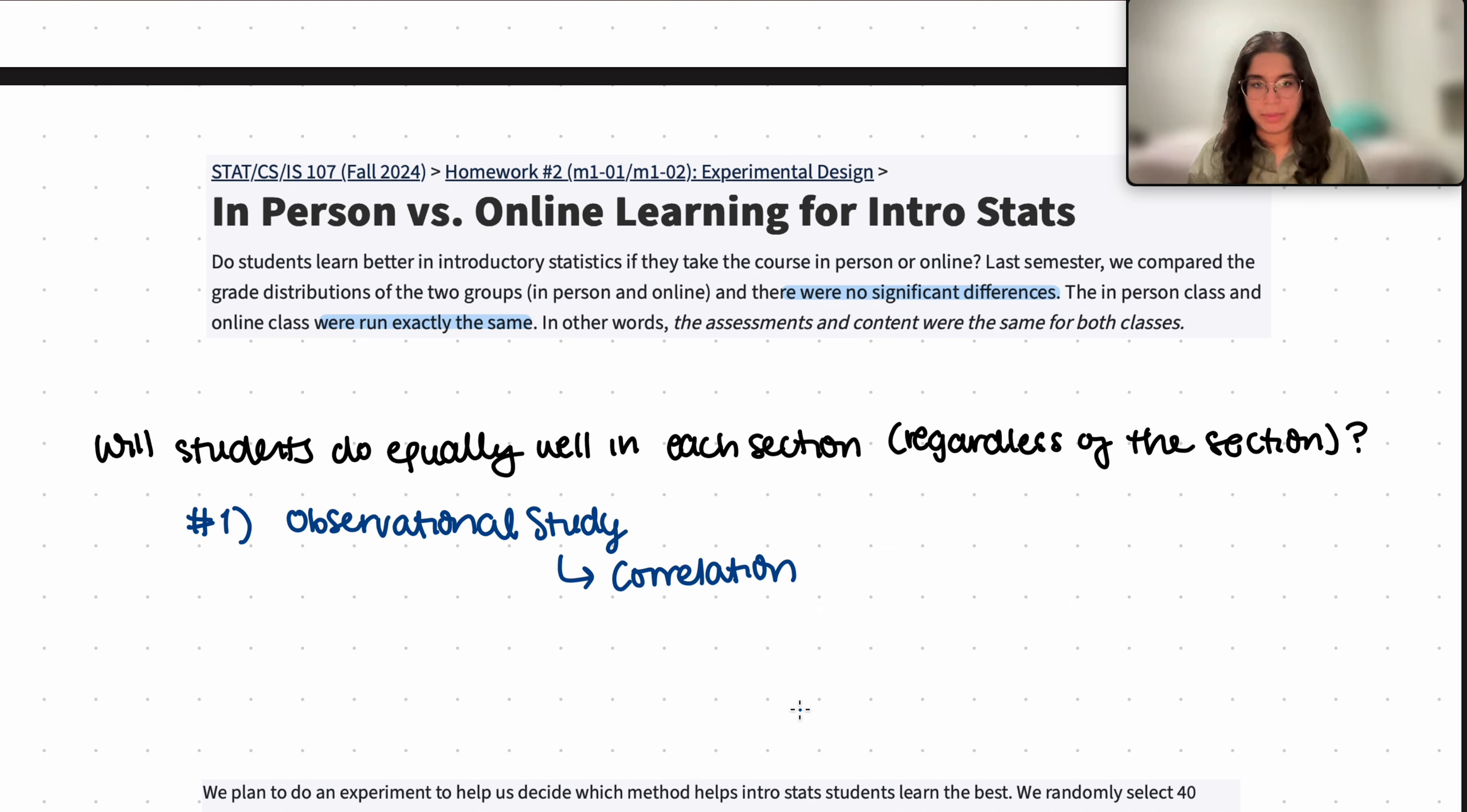A lot of people who may be more comfortable with self-studying may register for online and they may have different academic performance than those who register for in-person. That's just an example of such a confounding factor that can really affect that treatment group.